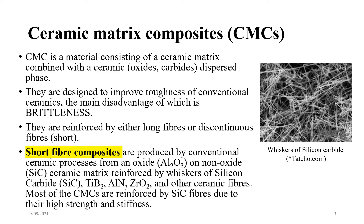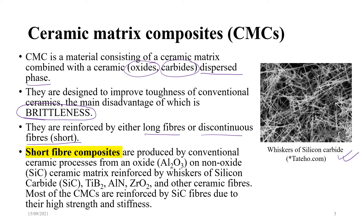Ceramic matrix composites: a CMC is a material consisting of a ceramic matrix combined with a ceramic — when we say ceramic we mean oxides, carbides, or nitrides — in a dispersed phase that works as the reinforcement. They are designed to improve toughness of conventional ceramics, the main disadvantage of which is brittleness. They are reinforced by either long fibers or discontinuous fibers such as whiskers.